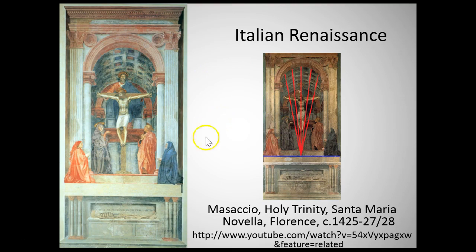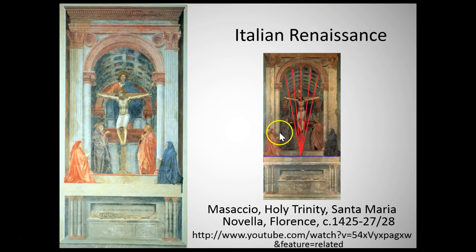Because Masaccio painted from a low viewpoint, the viewer would be standing much lower and looking up at Christ, which is very deliberate. We're able to see the orthogonals in the ceiling, and he traces the vanishing point to the ledge where the two donors of this painting sit. This is really one of the first uses of scientific linear perspective in painting, and that's why Masaccio is so important.